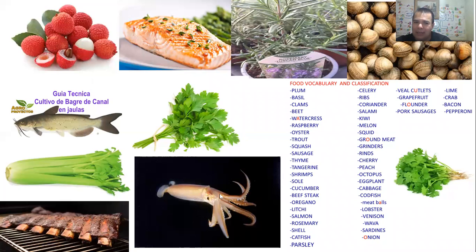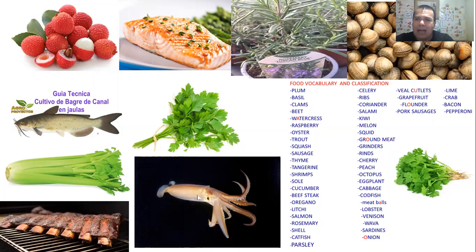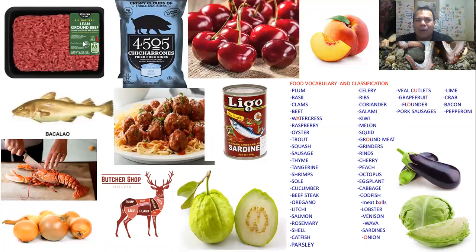Squid — it's seafood, not the octopus. It looks like a torpedo, the head is a little bit longer. Really delicious in paella or fried rice — once you season it well, it's tasty. Ground meat — used to make meatballs. Grinders — it's a device to grind the meat. So to have ground meat you need a grinder to grind the meat to get it.